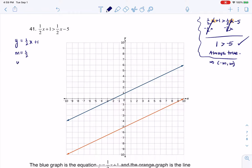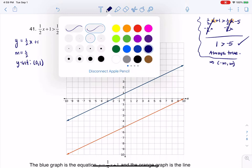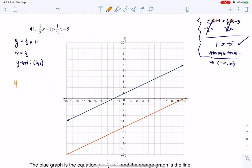Y equaling 1/2x + 1. I see a slope of 1/2 and a y-intercept at (0,1). And let me color code this, and let's look at the second part of this inequality on the right here, and we'll look at y equaling 1/2x - 5.